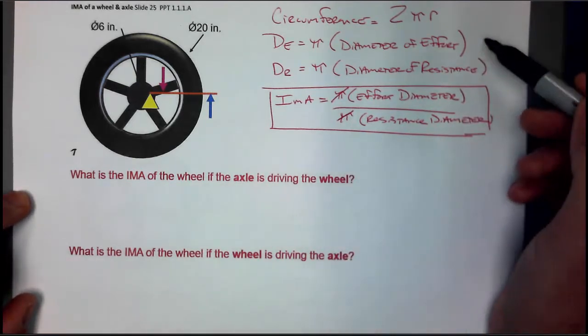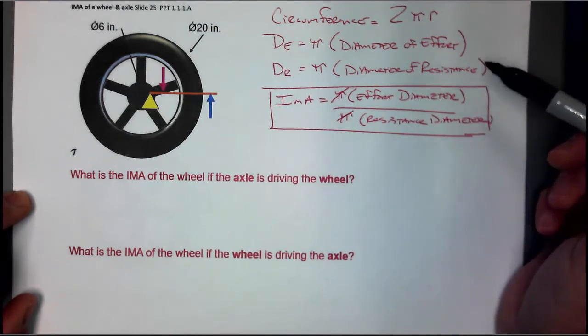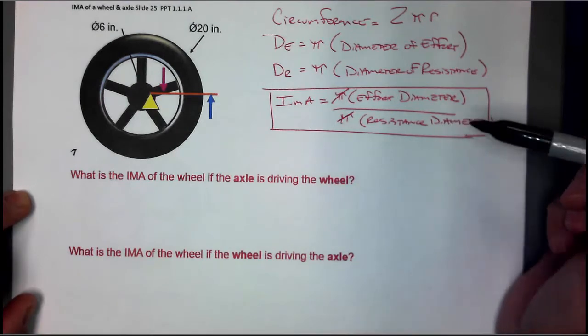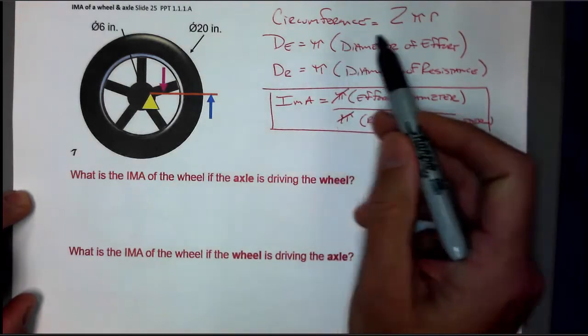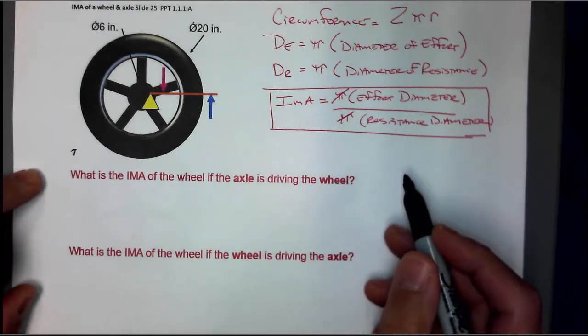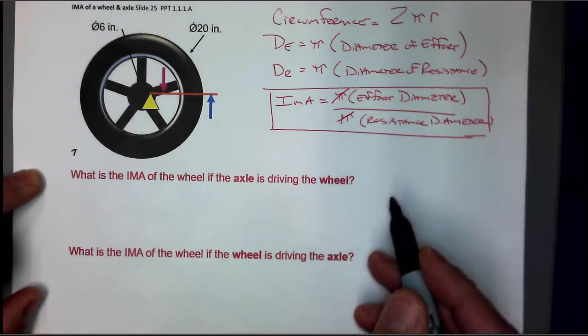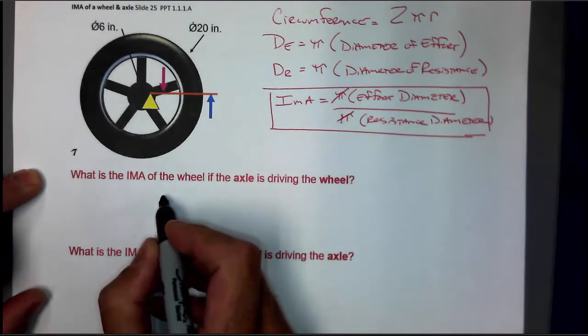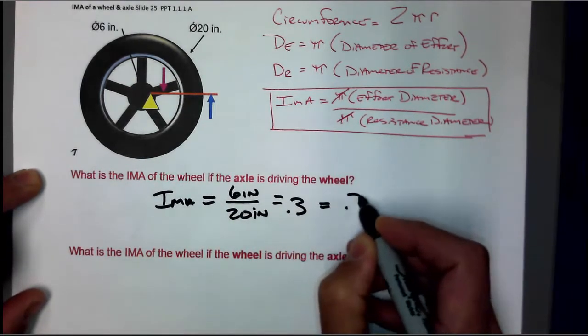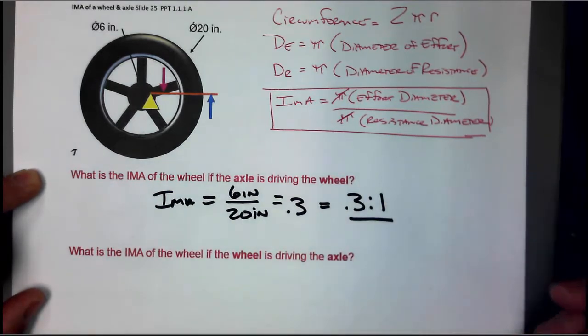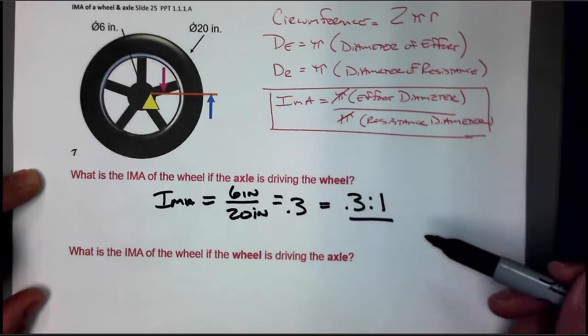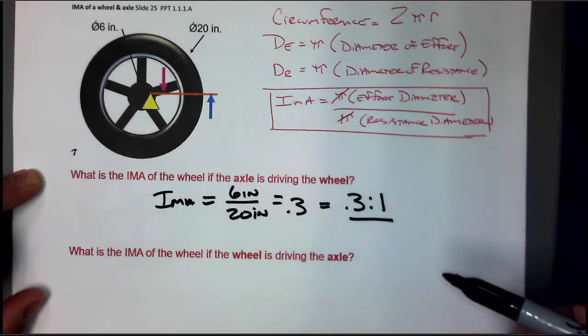IMA, by looking at the equation that we did up here earlier, the diameter of the effort over the diameter of the resistance is equal to IMA. We wrote this out earlier, you saw that on the video. So let's use that equation. Making the answer that IMA is equal to 0.3 to 1 if the axle is driving the wheel.